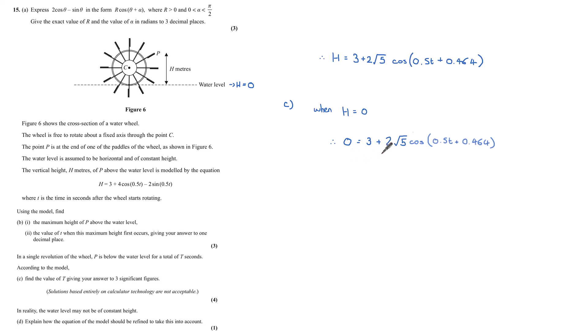0 equals 3 plus 2√5 cos(0.5t + 0.464). If we subtract 3 from both sides and divide by 2√5, then we've got cos(0.5t + 0.464) equals negative 3 over 2√5. Now we're going to consider our cos curve here. So here's our graph of cos x. We want to solve cos equal to minus 3 over 2√5. There's two values here of cos x that solve this equation: 2.3 and so on, and then subtracting 2.3 from 2π, we get our second value of 3.97 and so on.